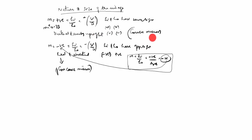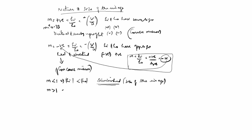If m is less than 1, then hi is less than ho, meaning the size of the image is diminished. If m is greater than 1, then hi is greater than ho — the image is magnified or enlarged. If m is equal to 1, then hi equals ho — that is same size.